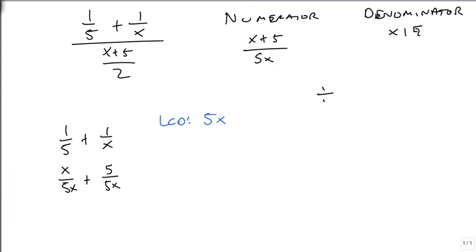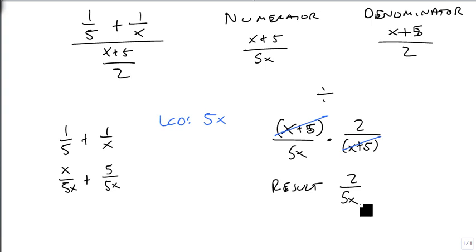My denominator is already x plus 5 over 2, so it's already simplified. So then we just take our x plus 5 over 5x, and we times it by the reciprocal of the denominator 2 over x plus 5. We look for anything in common, which the x plus 5's are, and so our result is 2 over 5x.